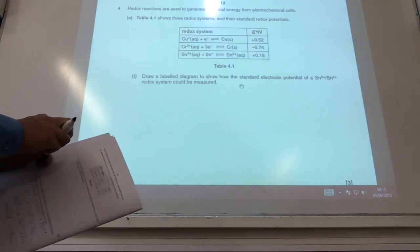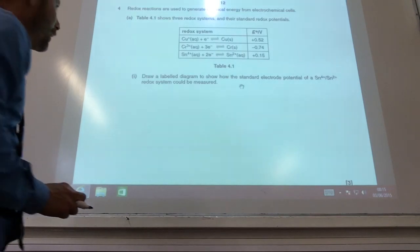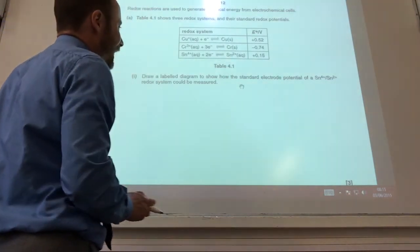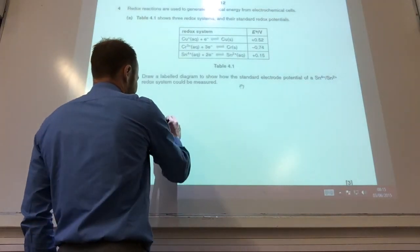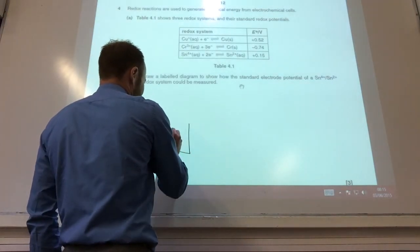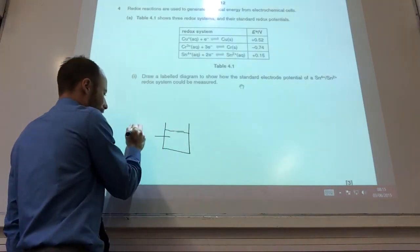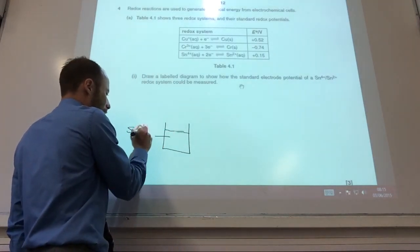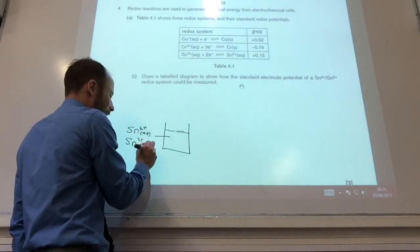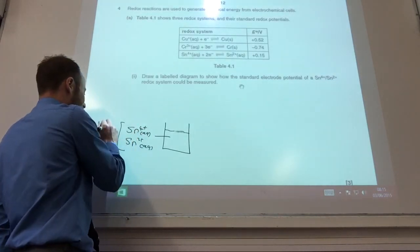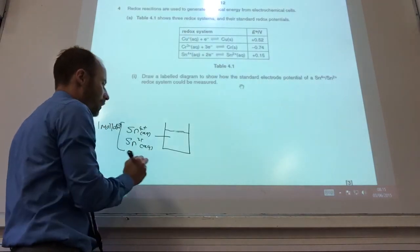So now I've gone to some electrochemical cells and it wants me to show how the standard electrode potential of the tin 4+/tin 2+ redox system can be measured. In my solution for the tin, I've got to have Sn⁴⁺(aq) and I also need Sn²⁺(aq), and both of those need to be 1 mol dm⁻³ concentration.